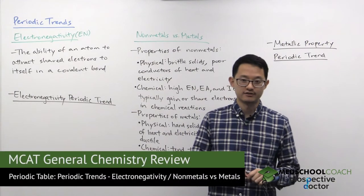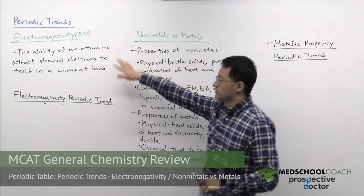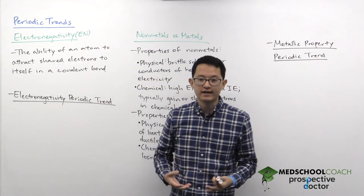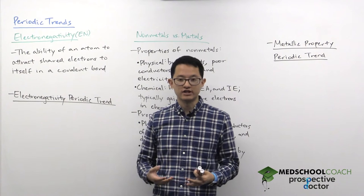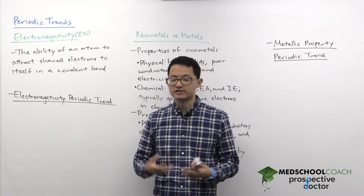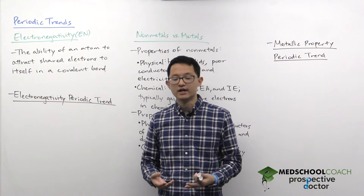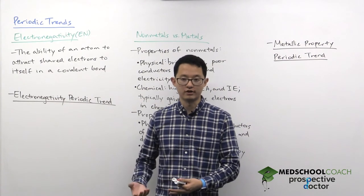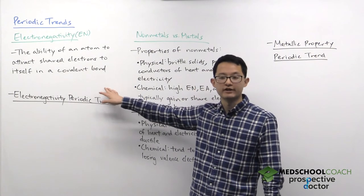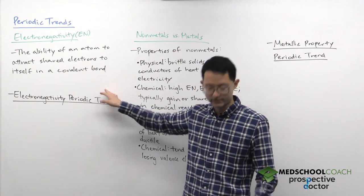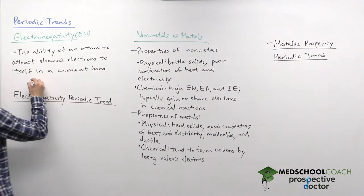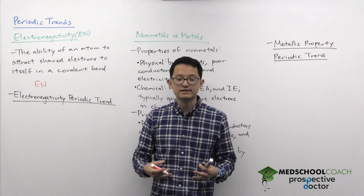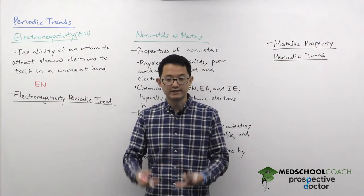Let's discuss our last two periodic trends. Electronegativity is defined as the ability of an atom to attract shared electrons to itself in a covalent bond. This is very important for determining whether your covalent bonds are polar or nonpolar. We're able to relate this to our periodic trend for the electrostatic force. If you increase the electrostatic force, you're increasing the ability of your nucleus to hold on to its valence electrons.